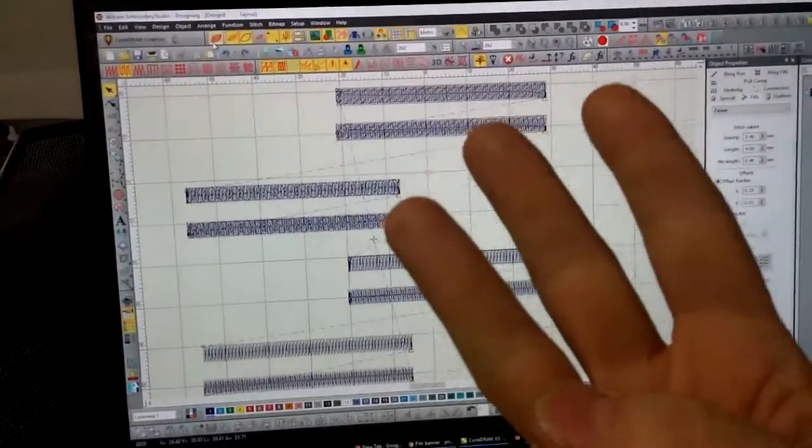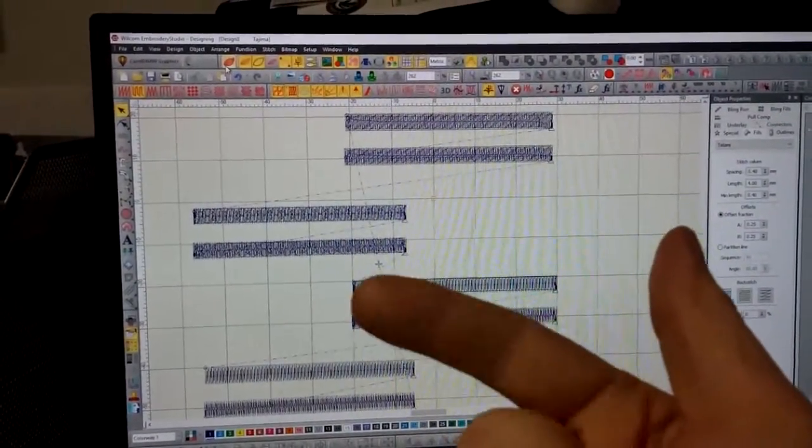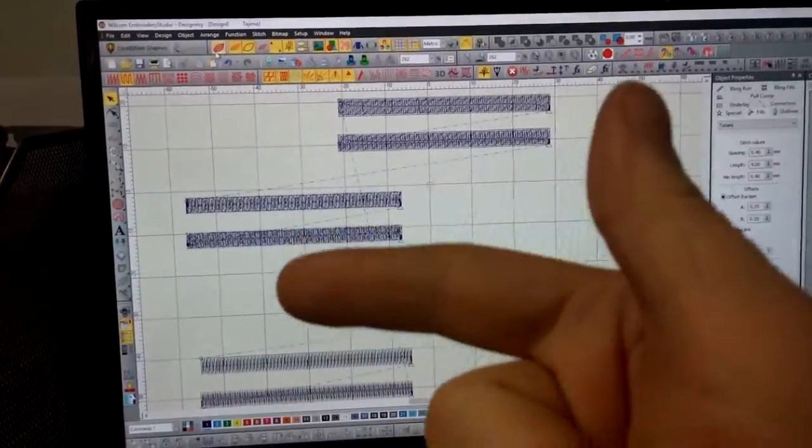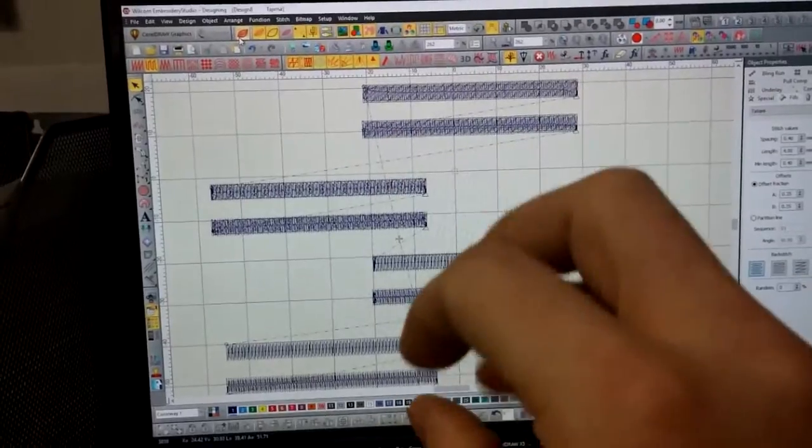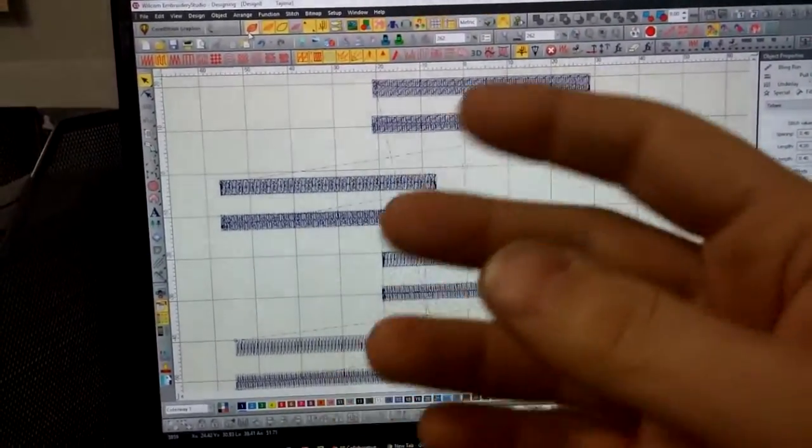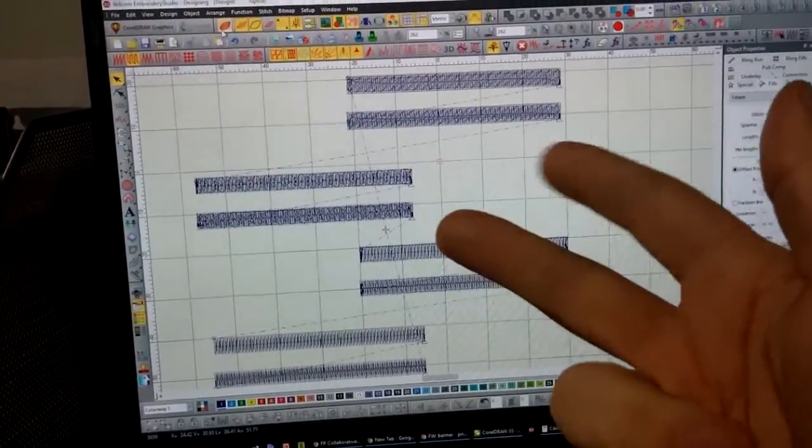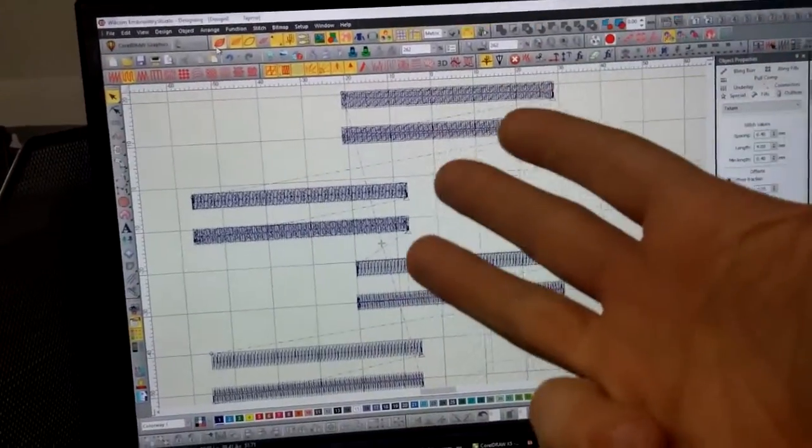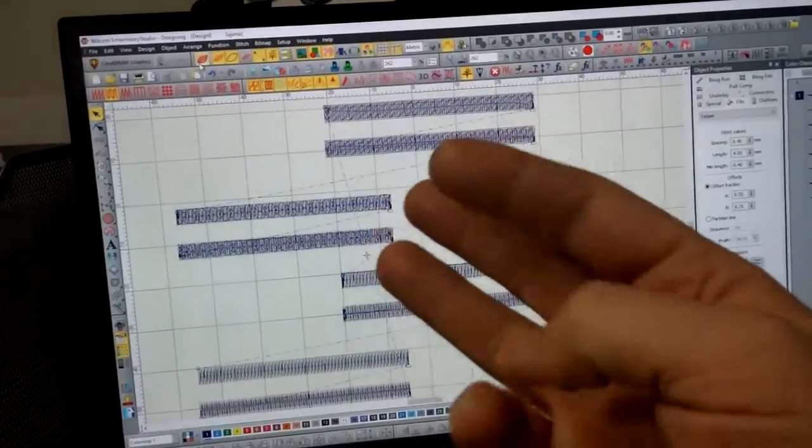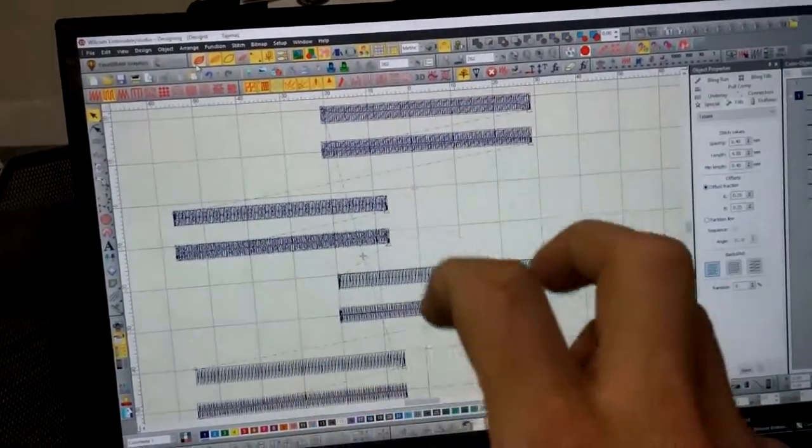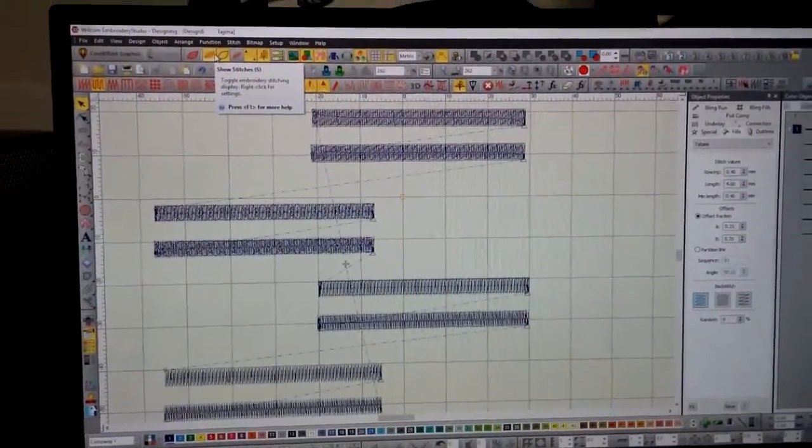I figured I would actually do a demonstration using the same exact two lines, two bars, one's a tatami fill, one is a satin fill, and the only difference between all of them, it has the same density, same pull compensation, the only difference between these four sets is different underlay types. Here we got tatami, here we got double zigzag, both of these still have edge runs too. An edge run just on its own, and no underlay at all. So, we're going to actually test it on three different materials.